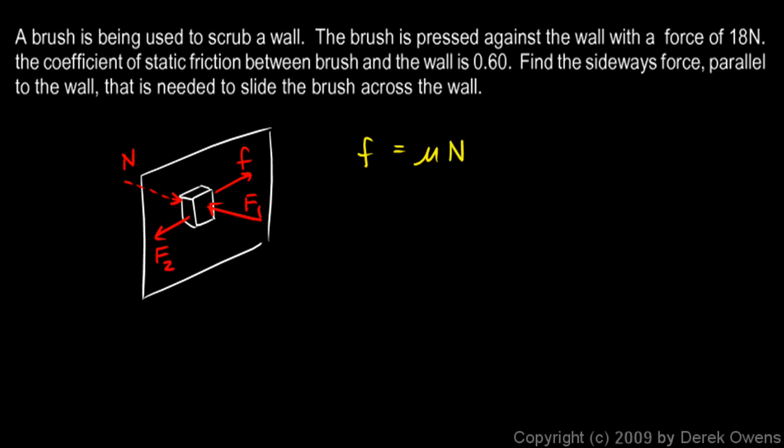Now what is N? This is where a good diagram helps. You can see from the diagram that N, the force of the wall pushing back on the brush, is equal to F1 here. The force that we're pushing the brush against the wall with. This is an example of a problem in which the normal force N is not equal to mg. In this case N is equal to F1 and F1 we're told is 18 newtons.